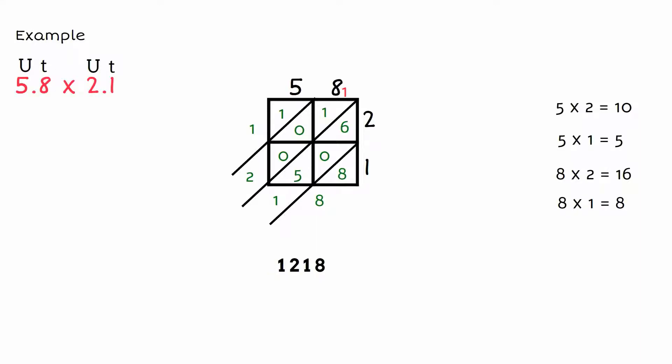The last thing to do is our decimal point. Where do we place our decimal point? One goes in between 5 and 8, the other goes in between 2 and 1. Now we have to follow them through to where they join up in the middle and then follow that through all the way down.